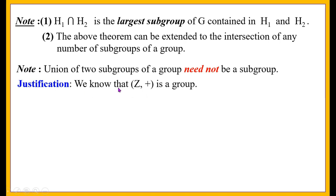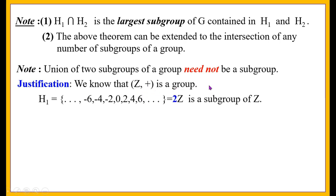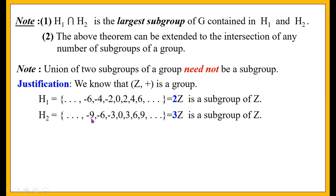We know that the set of integers with respect to addition is a group. Let H1 = {..., -6, -4, -2, 0, 2, 4, 6, ...} = 2Z, the set of even integers. H1 consists of even integers and is a subgroup of Z. H2 = {..., -9, -6, -3, 0, 3, 6, 9, ...} = 3Z, the set of all multiples of three, which is also a subgroup of Z.